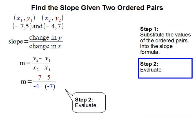Step 2: Evaluate. 7 minus 5 gets you 2. And negative 4 minus negative 7 is the same thing as negative 4 plus 7, because when you subtract a negative, it becomes plus. So negative 4 plus 7 is 3. And our slope is 2/3. This completes our problem.